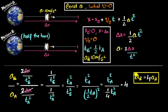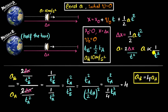Could we have figured this out without doing the full math? Yes. Looking at the model, since delta x is the same for both, acceleration is inversely proportional to T squared. So whatever factor T changes by, acceleration changes by the reciprocal of the square. If T doubles, acceleration becomes one-fourth. If T triples, it becomes one-ninth. In our case, T became half, so acceleration changed by the reciprocal of one-half squared, which is 4. There you have it — a very powerful shortcut.